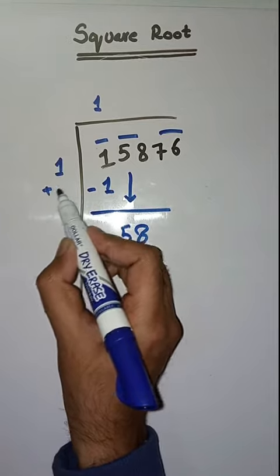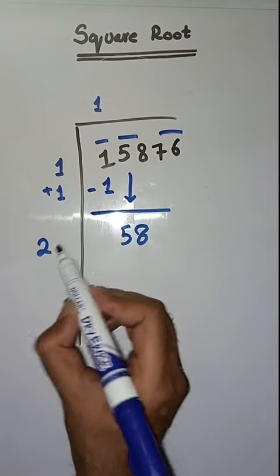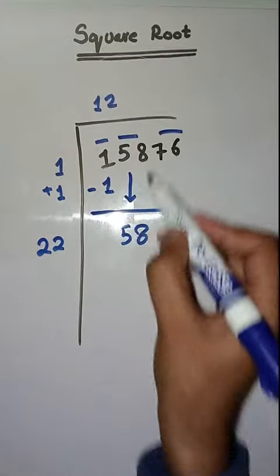Now we will do 1 plus 1 which is equal to 2. Now we will take a number 2. 22 times 2 is 44. Minus karenge, we pass aayega 58 minus 44 is 14.